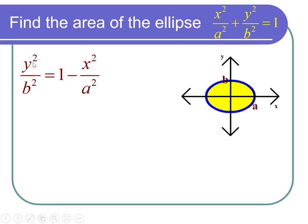Then to get rid of this square I'm going to take a square root of both sides and then multiply by the b. Notice when you take a square root of both sides you get a plus or minus. So what we get is y is equal to plus or minus b times the square root of 1 minus x squared over a squared.